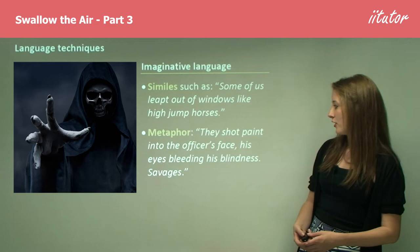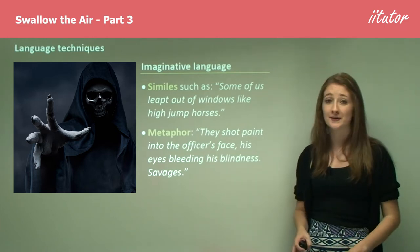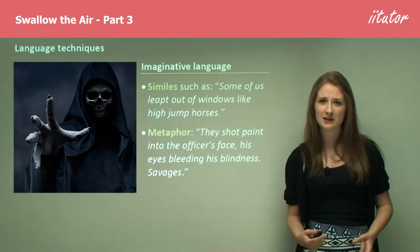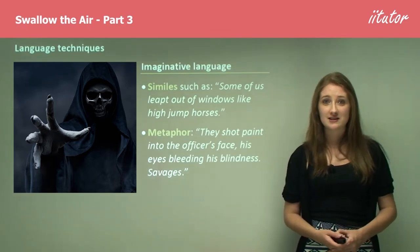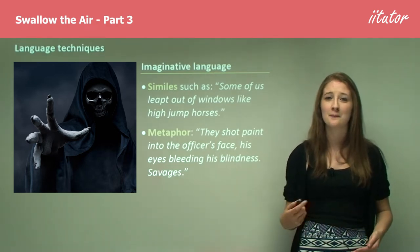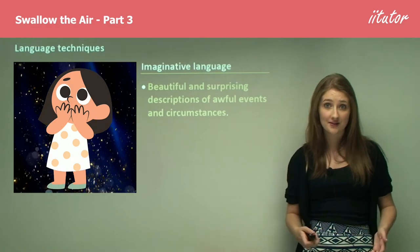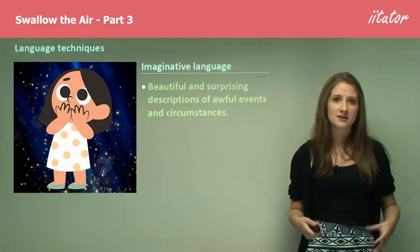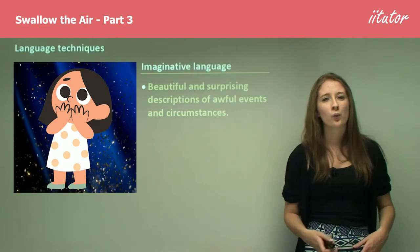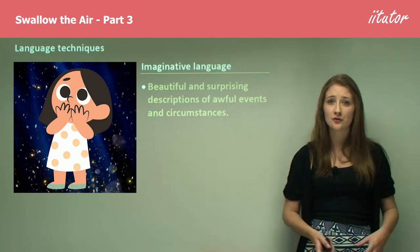The metaphor 'they shot paint into the officer's face, his eyes bleeding, his blindness, savages' — that two-sentence structure including the single word 'savages' on its own is again very imaginative. He's not being shot with a bullet, he's being shot with paint. You get the idea that Mae is almost hiding behind this beautiful descriptive language, perhaps shielding herself from the grim reality through imaginative description. These beautiful and surprising descriptions of awful events are quite unexpected because we're hearing about really awful concepts like not belonging and the barriers to belonging.